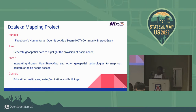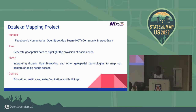The aim of the project was to generate geospatial data to highlight the provision of basic needs at the refugee camp. We integrated drones, OpenStreetMap, and other geospatial technologies to map centers of basic needs access — health, education, water and sanitation, and buildings. Originally we were going to map housing, but due to privacy and security risks, we decided to map them as buildings and not demarcate any residential areas.